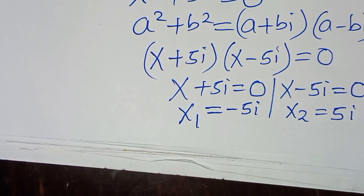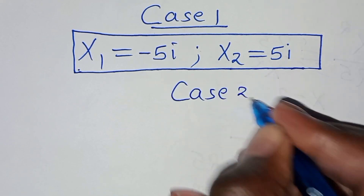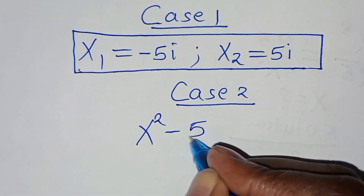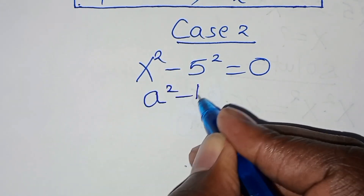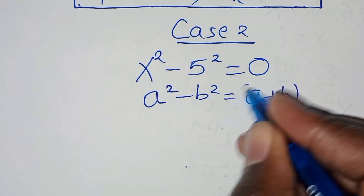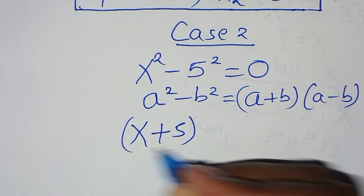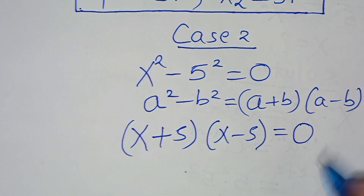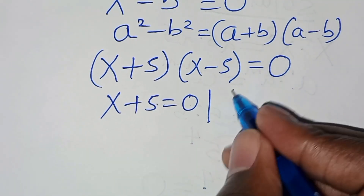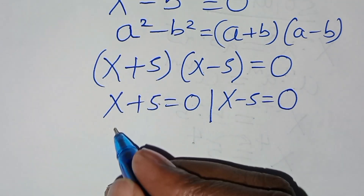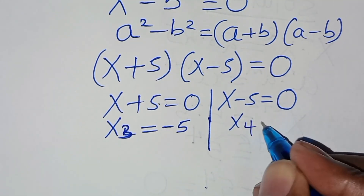For case 2, we have x squared minus 5 squared equal to 0. This is the difference of two squares, expressed as a squared minus b squared equals (a + b)(a − b). So we have x plus 5 times x minus 5 equal to 0, which implies x₃ equals negative 5, and x₄ equals 5.